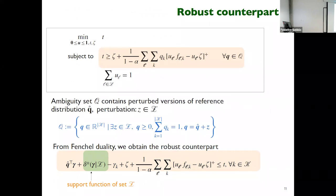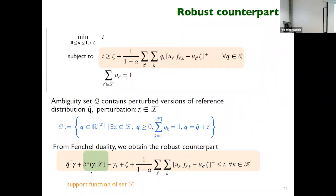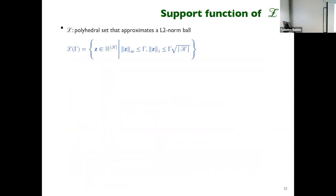To address infinite dimensionality, we consider an ambiguity set of a specific form: it consists of all distributions that are Z away from the empirical distribution. Z is the parameter controlling the size of the ambiguity set. From financial duality, we can obtain a robust counterpart of this problem depending on the support function of set Z, and we can choose different sets Z to control the size of the ambiguity set. Here we have considered a polyhedral set that approximates the L2 norm ball.